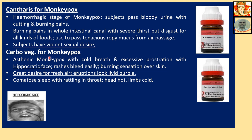Carbo vegetabilis for monkeypox: atonic monkeypox with cold breath and excessive prostration with a hippocratic face. Rashes bleed easily. Burning sensation over the skin. Great desire for fresh air. Eruptions look livid or purple. Comatose sleep with rattling in the throat. Head hot, limbs cold.